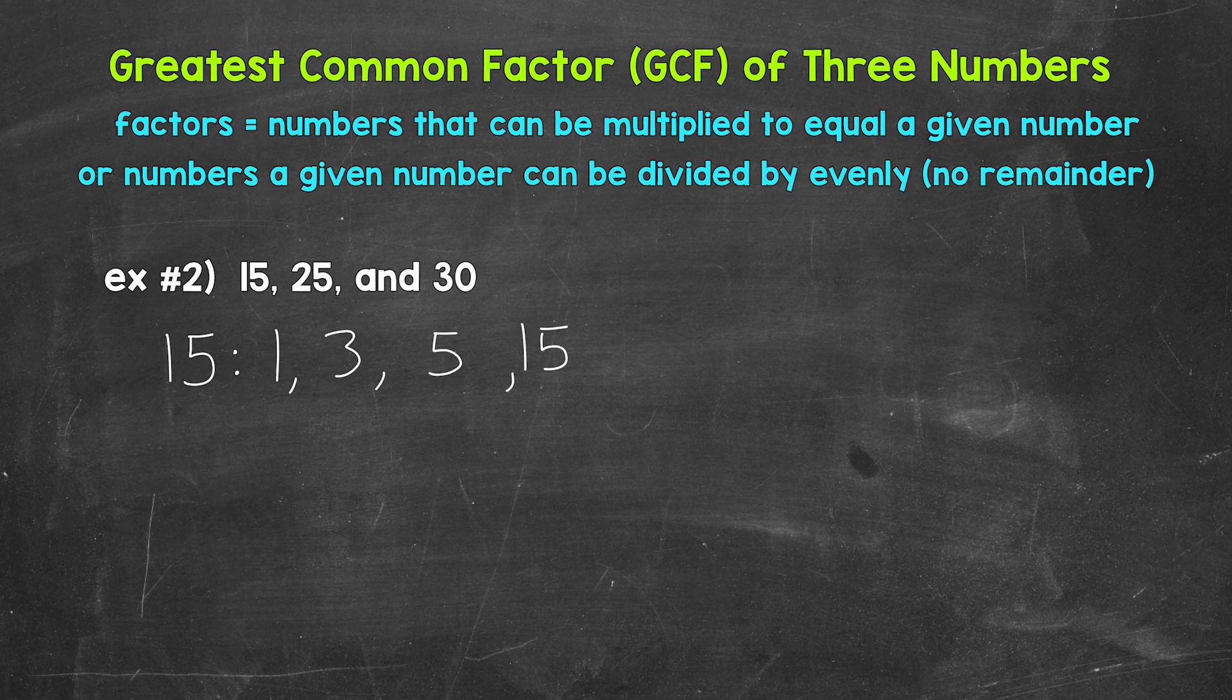You can always think about other possible factors if you're unsure if you're done. For example, 2, 4, 6, 7, but we have them all. The factors of 15 are 1, 3, 5, and 15.